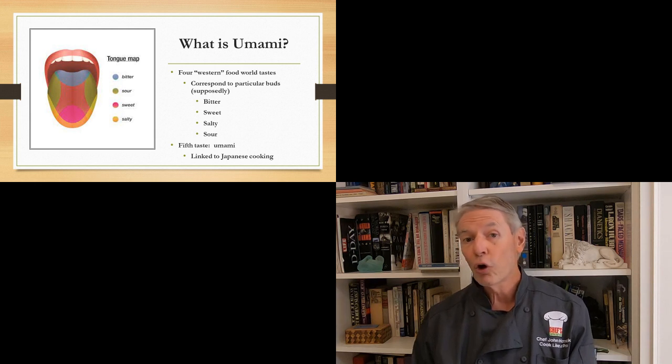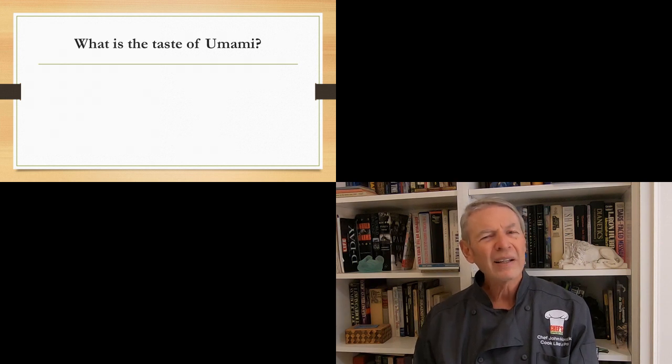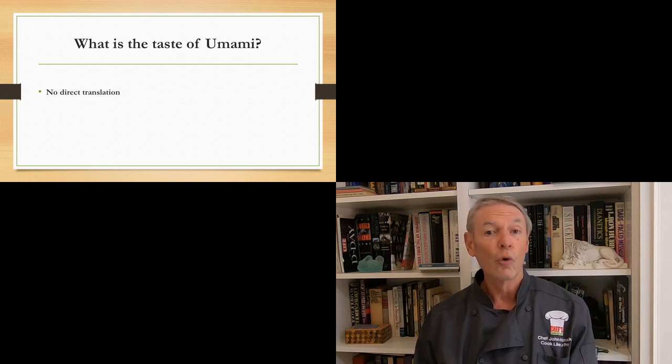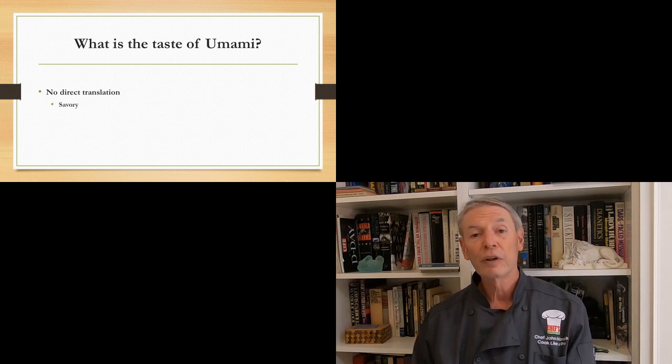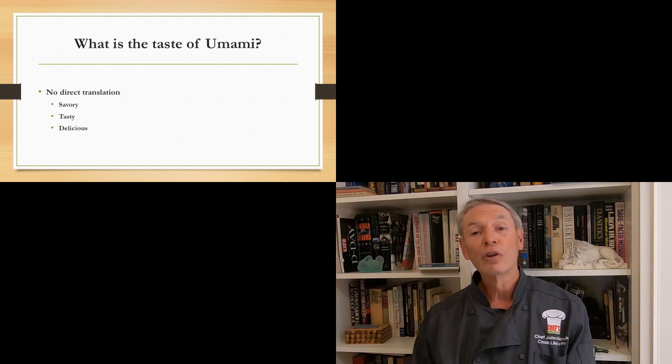Now, there's a fifth taste called Umami, and this is associated with Japanese cooking. Now, what exactly is the taste of Umami? Well, there is no direct translation for the Japanese word Umami. It has been loosely translated as savory or savoriness, tasty or tastiness, delicious or deliciousness.